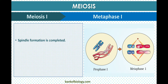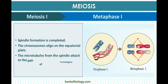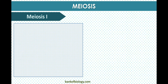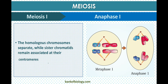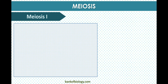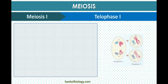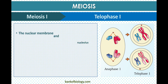In metaphase one, spindle formation is completed. The chromosomes align on the equatorial plate, and microtubules from the spindle attach to the pair of homologous chromosomes. In anaphase one, the homologous chromosomes separate while sister chromatids remain associated at the centromere.